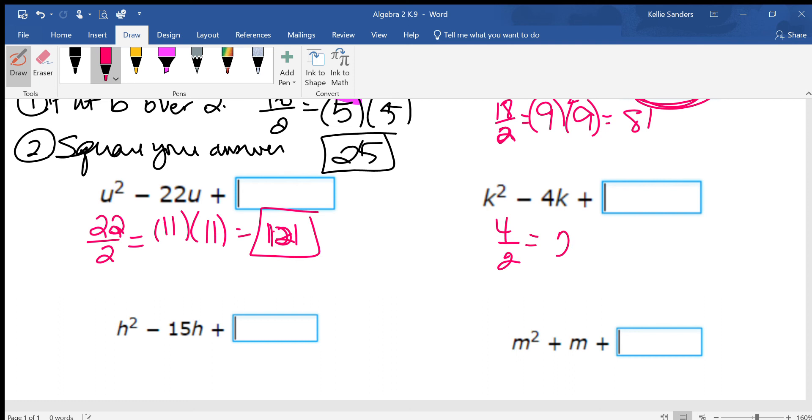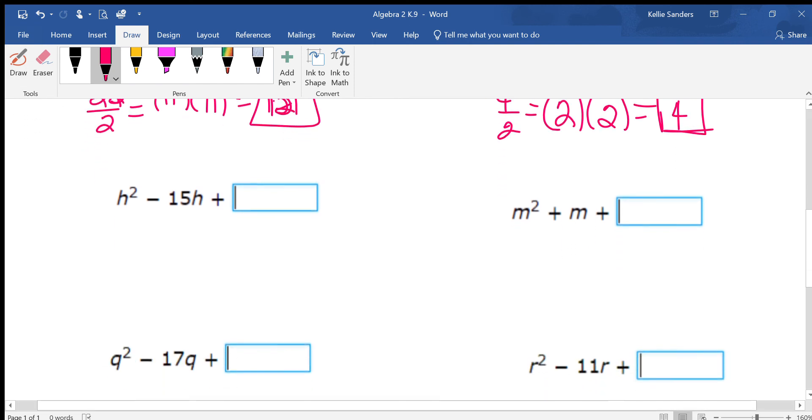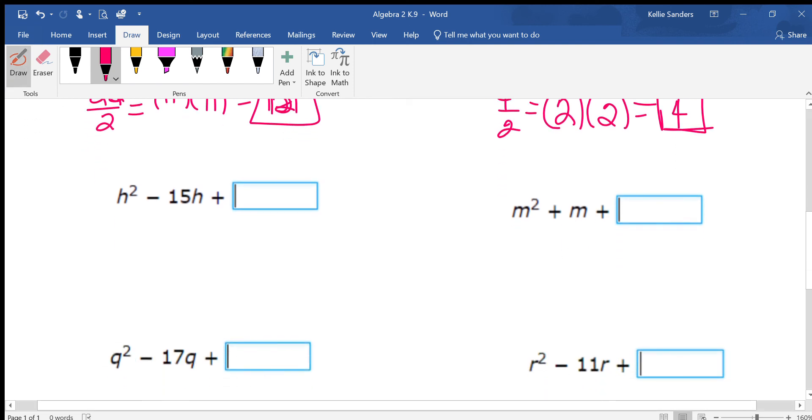4 over 2 is 2. 2 times 2 is 4. The only time that happens is whenever you get the answer that you start off with.